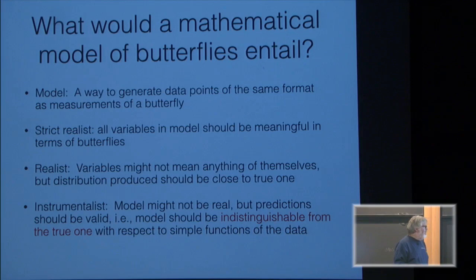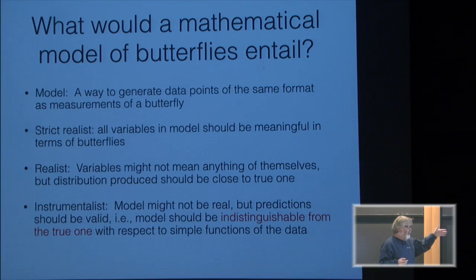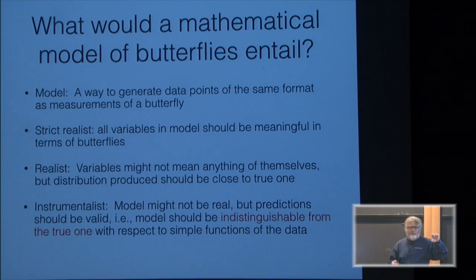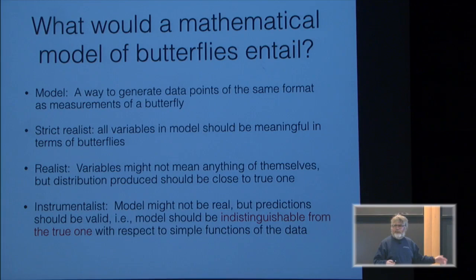We don't want to be overfitting the butterflies we've seen, even though we want to adopt something real about the butterfly distribution. A pragmatist would say: I don't care whether it's real or not, what I care about is that it makes accurate predictions. If my model says that if the proboscis size is bigger than five centimeters, then the body length should be bigger than two centimeters, I should be able to go measure that and it should be true in the real world. Let's concentrate on just the pragmatic point of view for now.